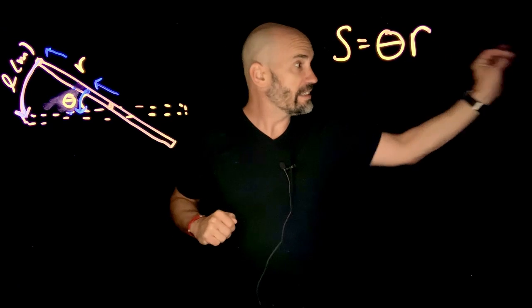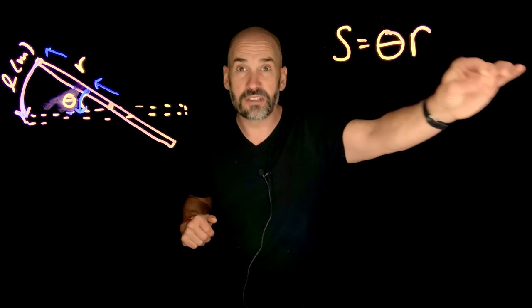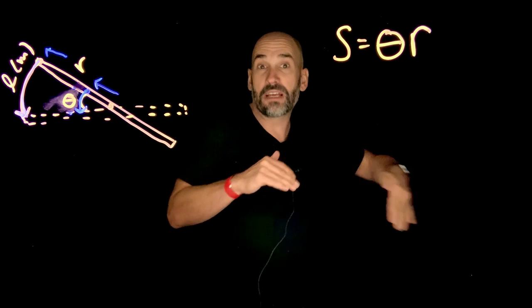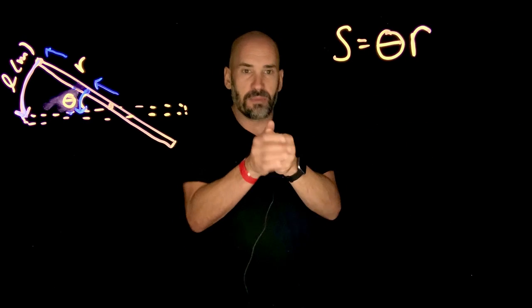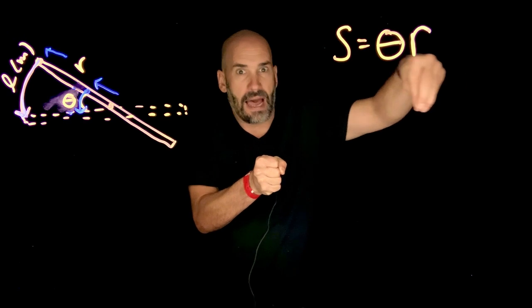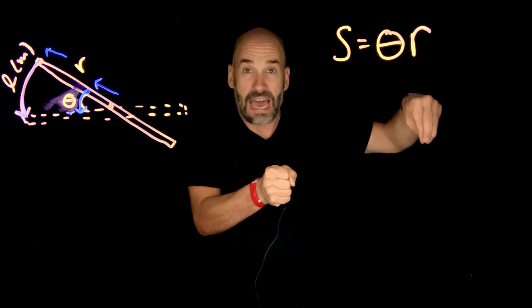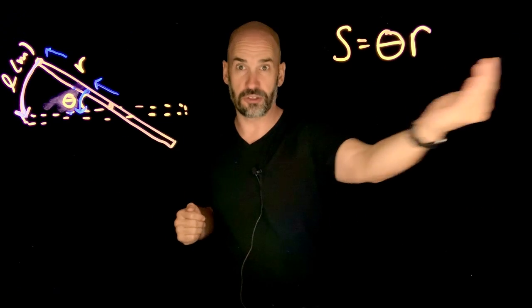The distance that the point at the end of that helicopter blade would move would be thousands of miles. It would swing up through Canada. But then imagine a point that's right next to me in Denver and this point swings through pi over two radians. That's not even a meter. So the farther you are out, the more distance you cover.